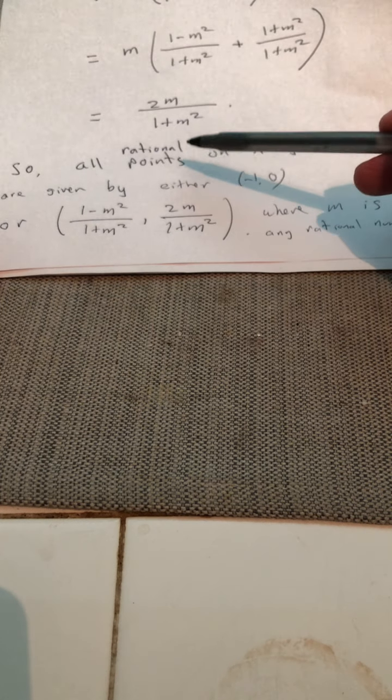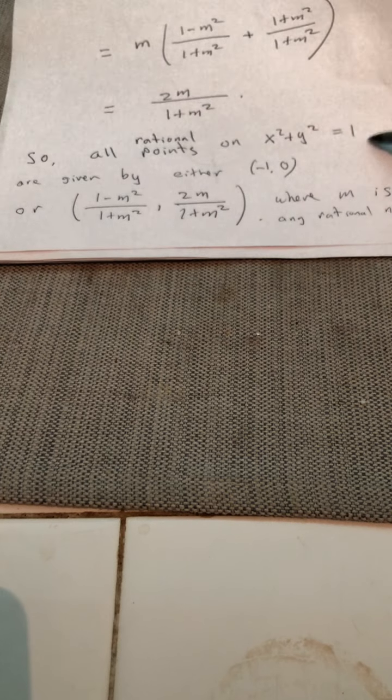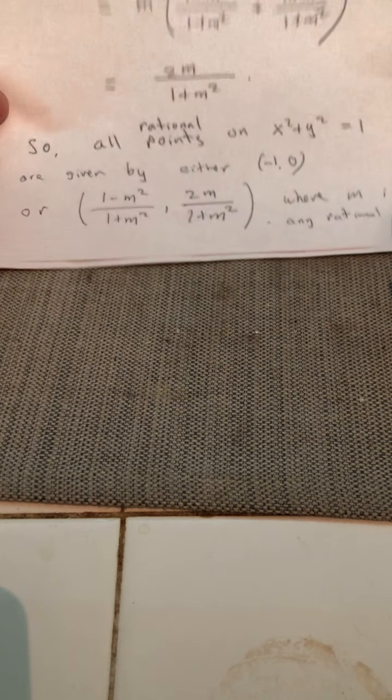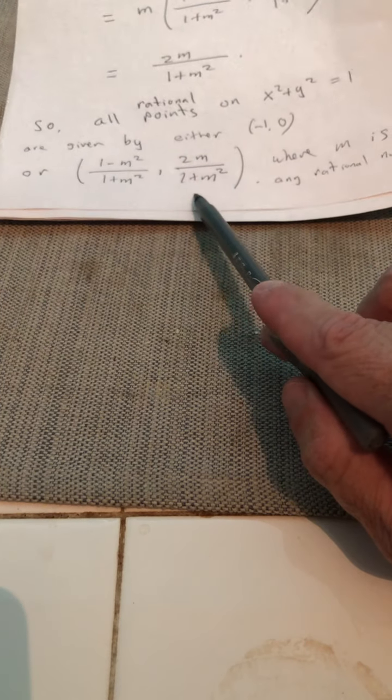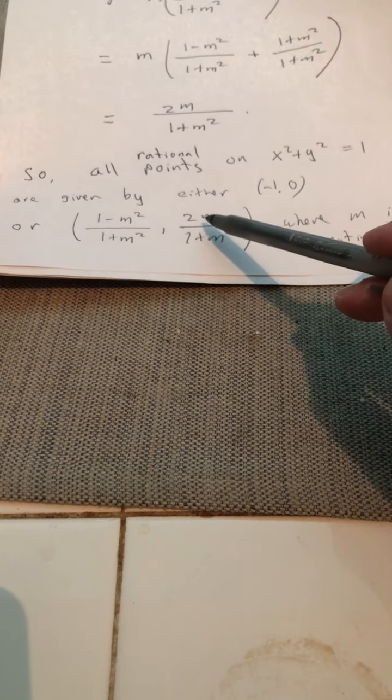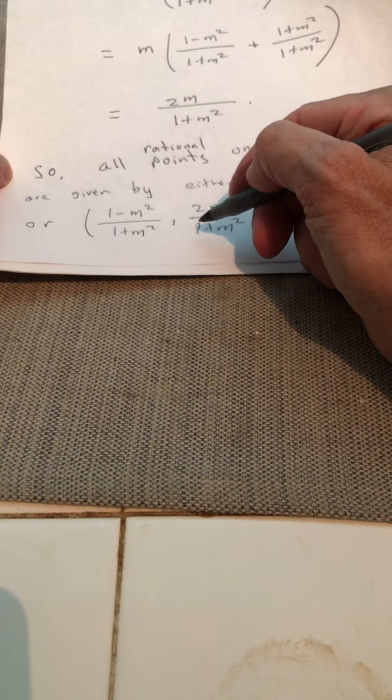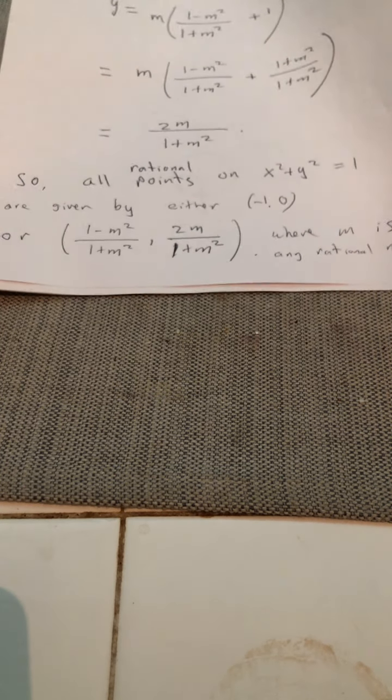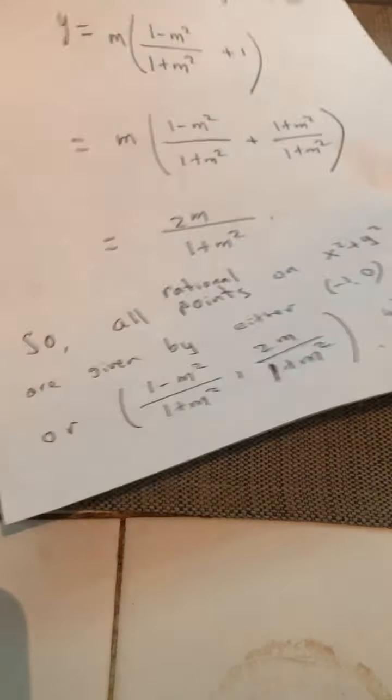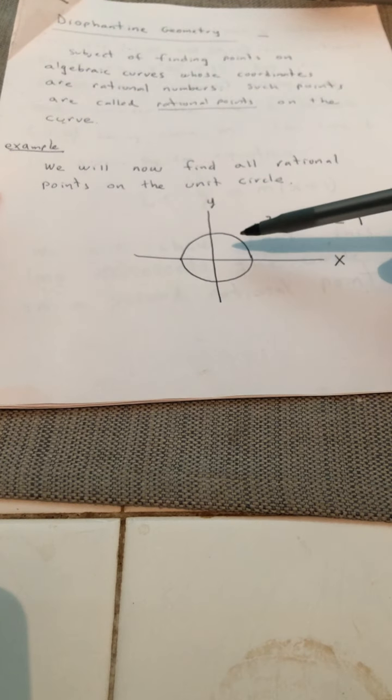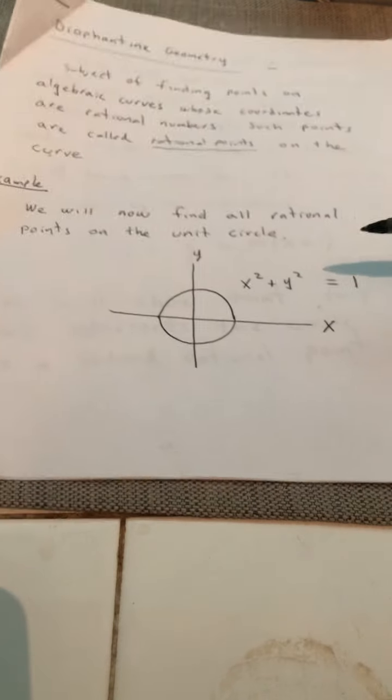So, all rational points on the unit circle x squared plus y squared equals one are given by either negative one zero or this ordered pair, which is in terms of m. We have one minus m squared over one plus m squared is the x coordinate. The y coordinate is two m over one plus m squared, where m is any rational number. So, this process can be repeated for other situations. For example, a different circle or maybe an ellipse. So, you'll see what I'm talking about when you do the homework.